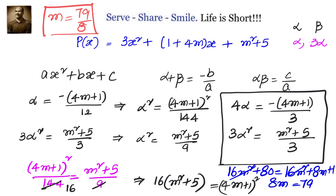To recap: we were given a polynomial with one zero being one third of the other, so we took them as alpha and 3 alpha. You can also take them as alpha and alpha by 3 — I just preferred to avoid fractions. The sum of zeros is 4 alpha and the product is 3 alpha². Using minus b by a and c by a, we formed two equations in alpha, equated alpha² from both, and got m equals 79 divided by 8.